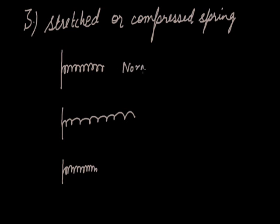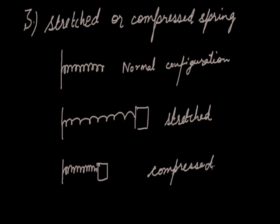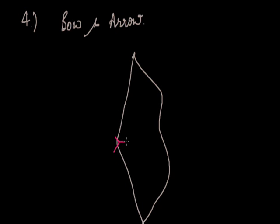A normal spring in its natural configuration cannot do work, but if it is stretched or compressed, it may displace any object bound by it — doing work on it. So a stretched or compressed spring possesses potential energy due to its configuration. Similarly, a bow and arrow: due to the bow's configuration when drawn, the arrow gains potential energy, and when released, it may cause lethal consequences. These are examples of potential energy.